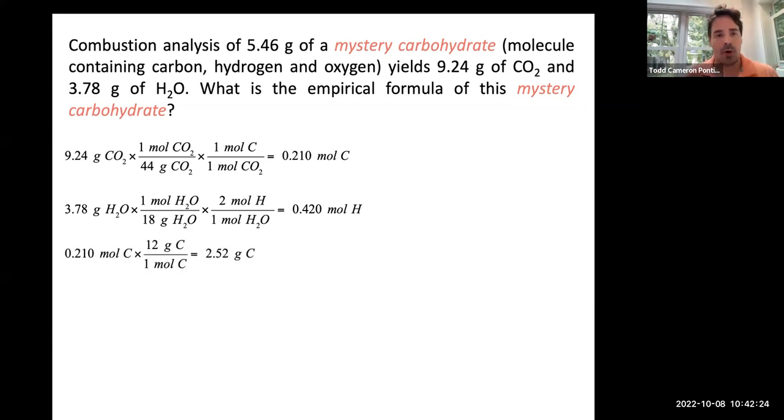So 0.210 mole of carbon, 12 grams per mole of carbon. This is 2.52 grams of carbon. That tells us our original sample had that much carbon in it. Hydrogen, once again, a very user-friendly calculation, 0.42 mole of hydrogen, one gram per mole. Our original sample had 0.42 grams of hydrogen.